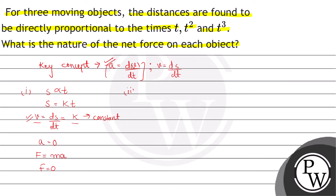In the second case, the distance is directly proportional to t square. So s = k times t square. From here, v = ds over dt, which equals k into 2t, or we can write it as 2kt. Now we will calculate a = dv over dt, which gives us 2k.